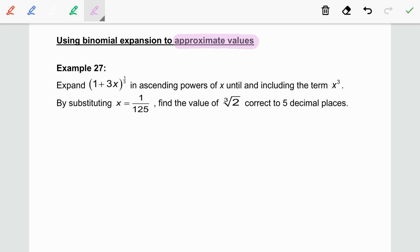Let us look at example 27. In this question, we are required to expand (1 + 3x)^(1/3) in ascending powers of x until and including the term x^3, and then, by substituting x equal to 1/125, find the value of cube root 2 correct to 5 decimal places.